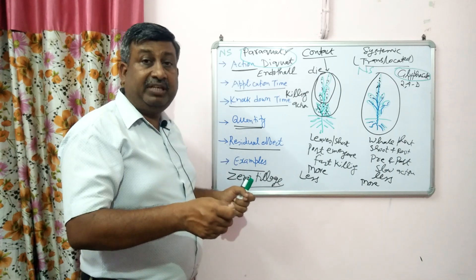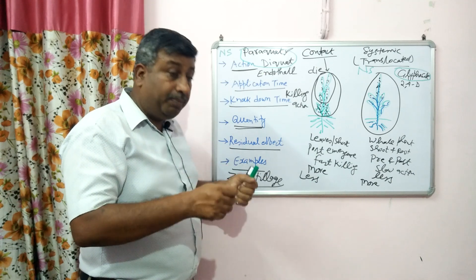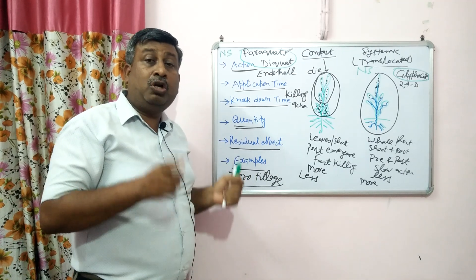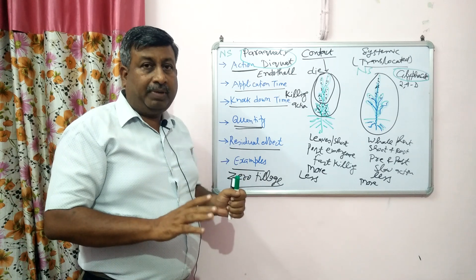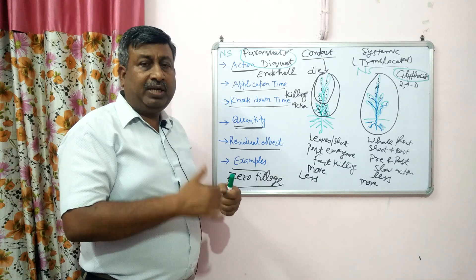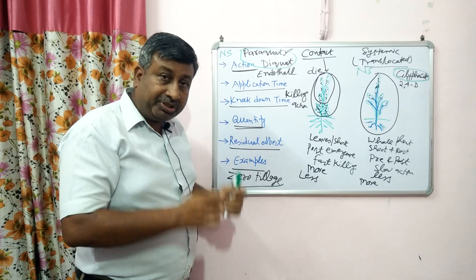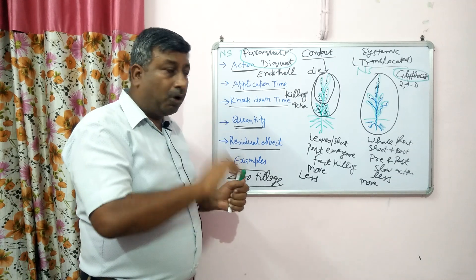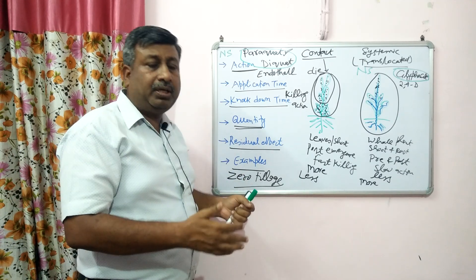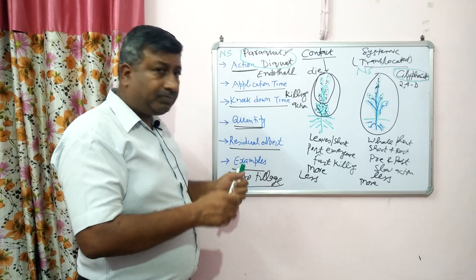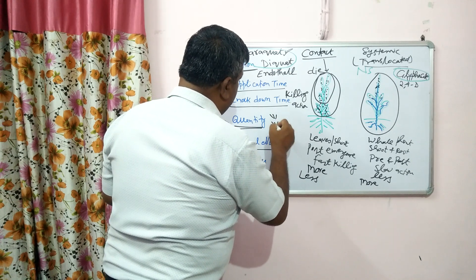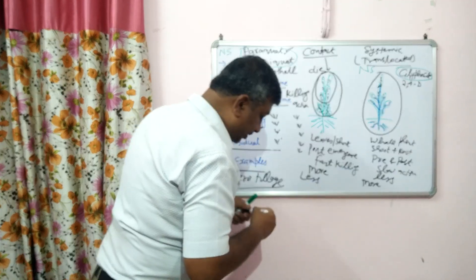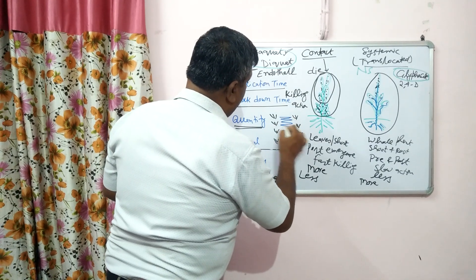That is why these herbicides are not suggested for broadcast spraying in crops. But if there is heavy vegetation and immediate killing is required, contact herbicides can be used with the precaution that they are applied only in the inter-row space and droplets do not contact the crop. These non-selective herbicides should be applied only in the inter-row space, not on the crop row.